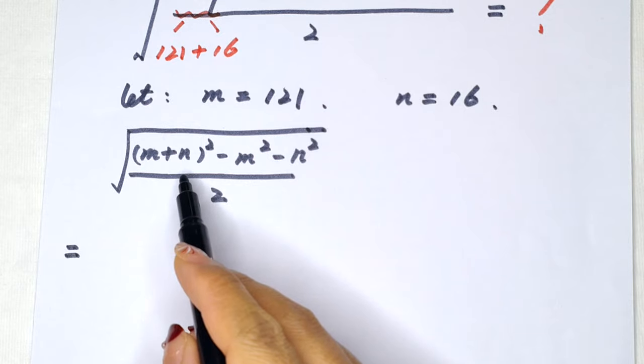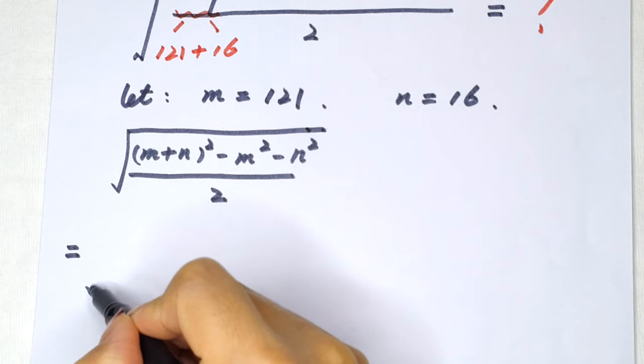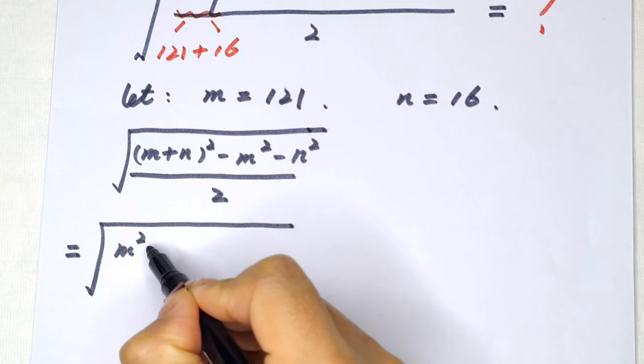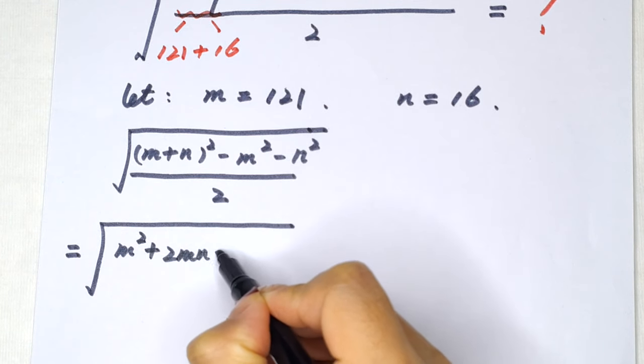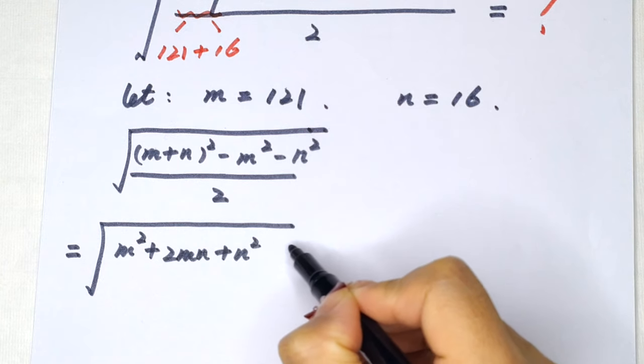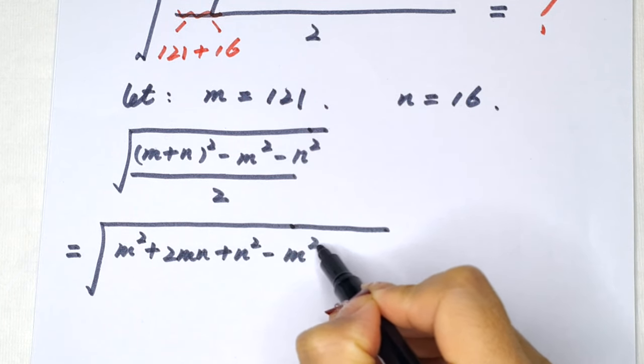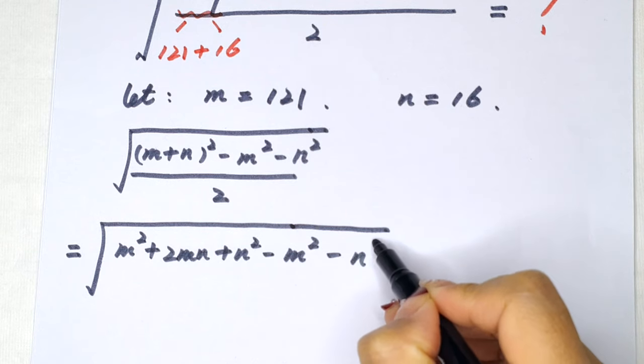we opened bracket, square root of m squared plus 2mn plus n squared, then minus m squared minus n squared, divided by 2.